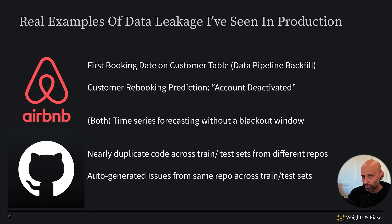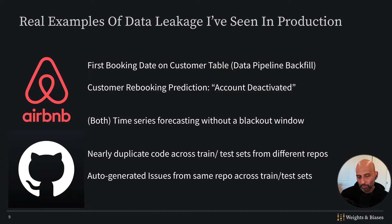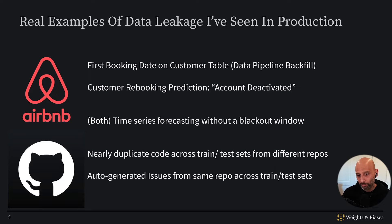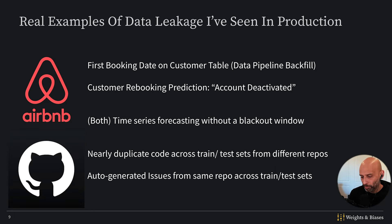The same thing happened with another model at Airbnb — a model about rebooking, customers booking listings. There was a field that indicated if an account was deactivated, and similarly that was backfilled, creating a situation where information was leaking from the future. There's also an example I'll talk about a bit later: time series forecasting without a blackout window. I've seen this happen at almost every place I've worked.